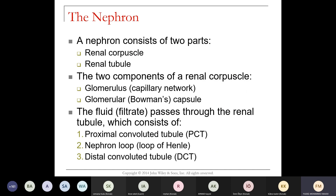Nephrons are made up of the renal capsule and renal tubule. The components of the renal capsule are the glomerulus — the capillary network — and then the Bowman's capsule, also called the glomerular capsule. The filtrate passes through the renal tubule starting at the proximal convoluted tubule, then goes to the loop of Henle, and then to the distal convoluted tubule.